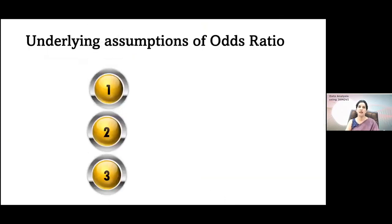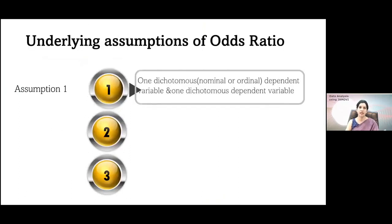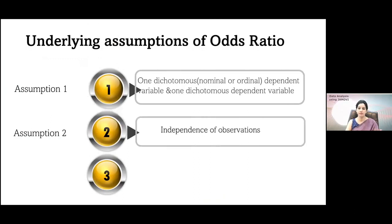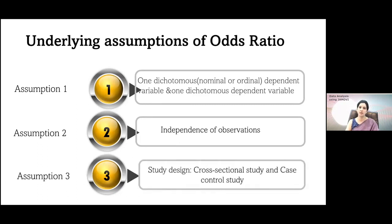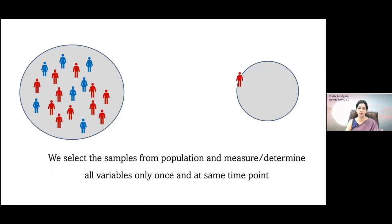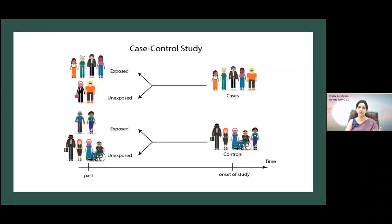Coming to the odds ratio: it is usually used in a case-control study or an analytical cross-sectional study. The underlying assumptions include one dichotomous dependent variable and one dichotomous independent variable, and independence of observation. The third assumption is that it is done in an analytical cross-sectional study or case-control study — where you select a sample from a population and measure all variables only once at the same time point. In a case-control study, you have cases and controls, perhaps in a 1:2, 1:3, or 1:4 ratio, and you assess exposure or unexposure to a particular risk factor, then classify results in a two-by-two table.